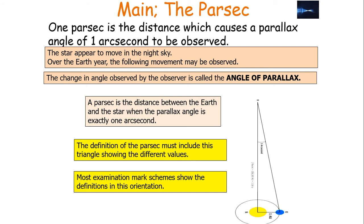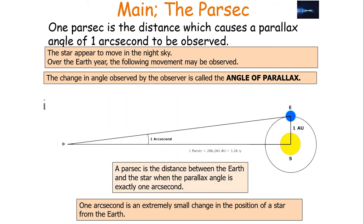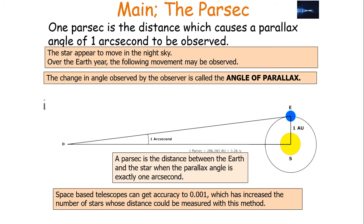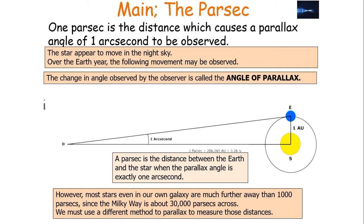The definition of the parsec must include you drawing this triangle to show the different values. Most examination mark schemes show this particular orientation in the definition of your particular parsec. 1 arc second is an extremely small change in the position of a star from the Earth. Parallax angles of less than 0.01 arc seconds are actually very difficult to measure from the Earth because of the smearing effect of the Earth's atmosphere, which limits Earth-based telescopes to measuring distances to stars to approximately 100 parsecs away. Space-based telescopes can get an accuracy to 0.001, which increases the number of stars whose distance can be measured via this parallax methodology. However, most stars, even in our own galaxy, are much further away than 1,000 parsecs since the Milky Way is about 30,000 parsecs across. We must therefore use a different method to the parallax methodology to measure those distances.